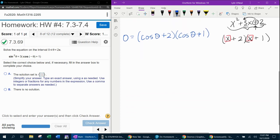And now that it's factored, I simply need to set each factor equal to zero and solve. So cosine theta plus two equals zero, and cosine theta plus one equals zero, setting both of those factors equal to zero.